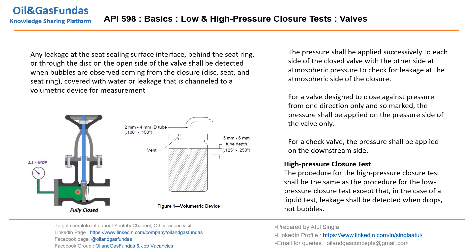For the check valve, pressure shall be applied on the downstream side — whichever side we want to prevent backflow from, we apply pressure on that side. For the high pressure closer test, the procedure is the same as for the low pressure closer test, except that in the case of a liquid test, leakage shall be detected when drops are observed, not bubbles. This is the basic difference between low and high pressure closer tests.